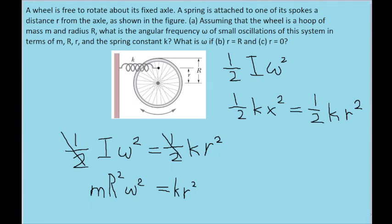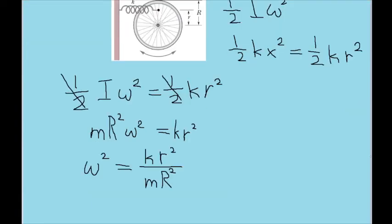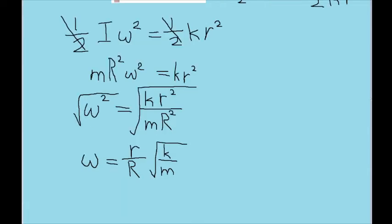Now let's get the omega on its own by taking the square root of both sides. And since we have an r squared and another r squared on the inside, we can just take them out. And this is what we end up with. And this fits the parameters for part a. So this is going to be the answer for part a.